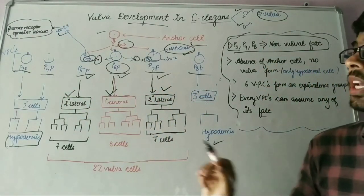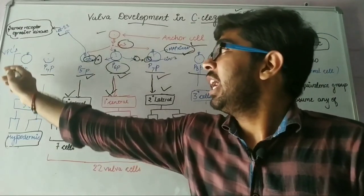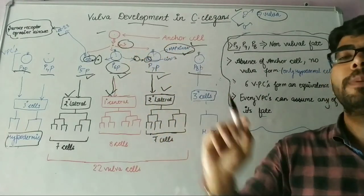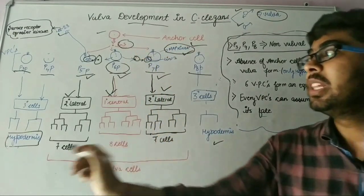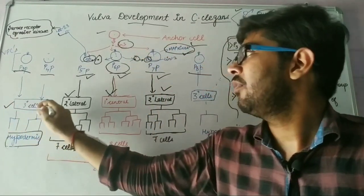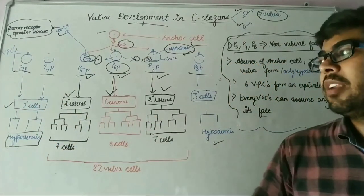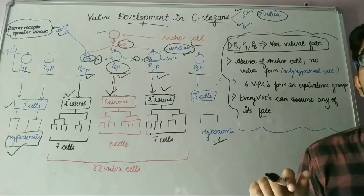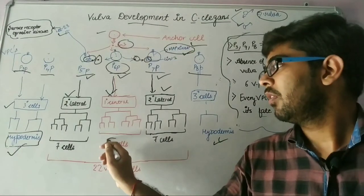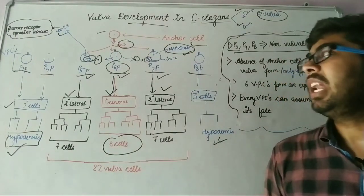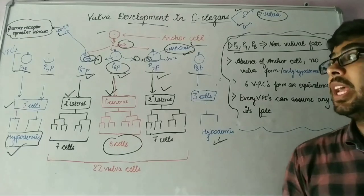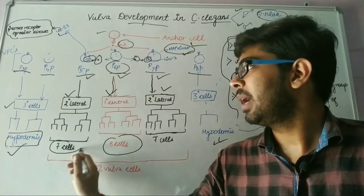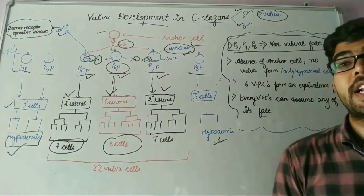Now, the P3P, P4P, and P8P will not receive any LIN3 protein. That's why there is tertiary cell fate found and it will lead to hypodermis formation. The primary central cell will form 8 vulva cells from P6P, and P5P will form 7 cells by its secondary lateral fate.